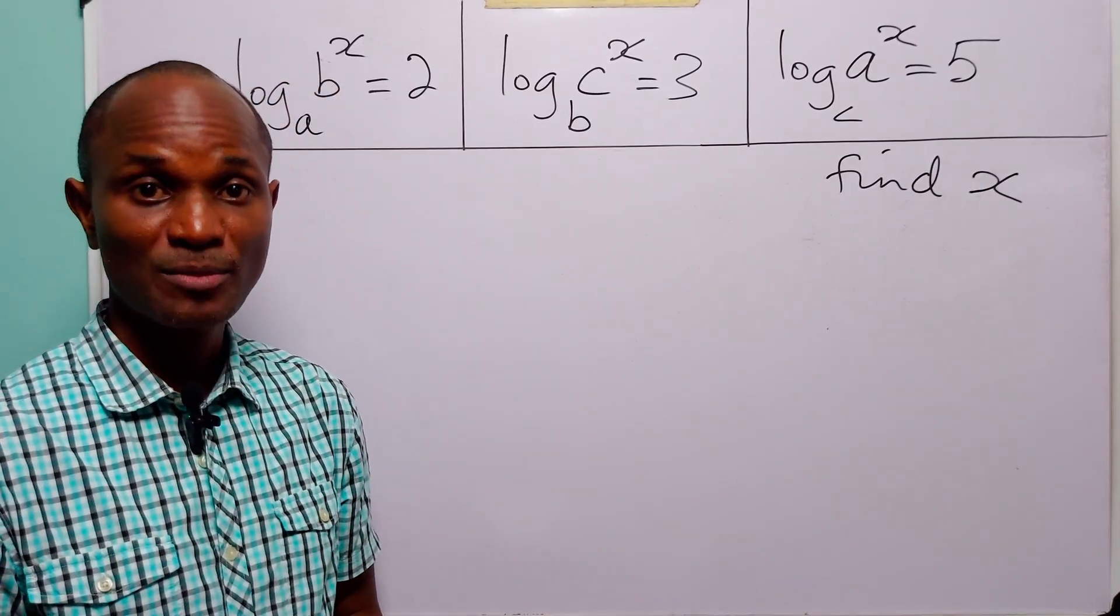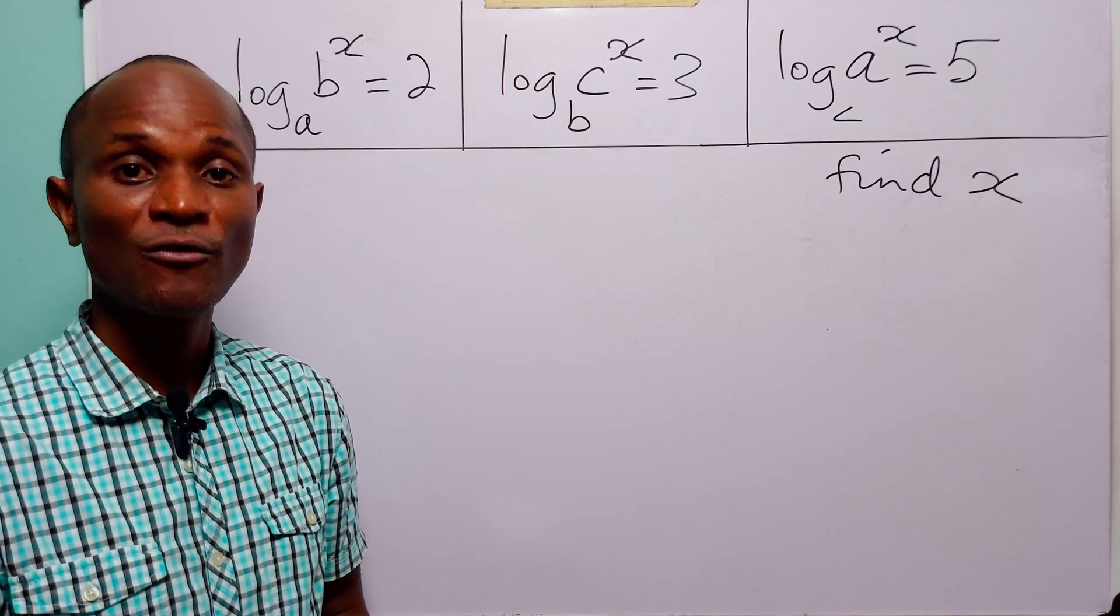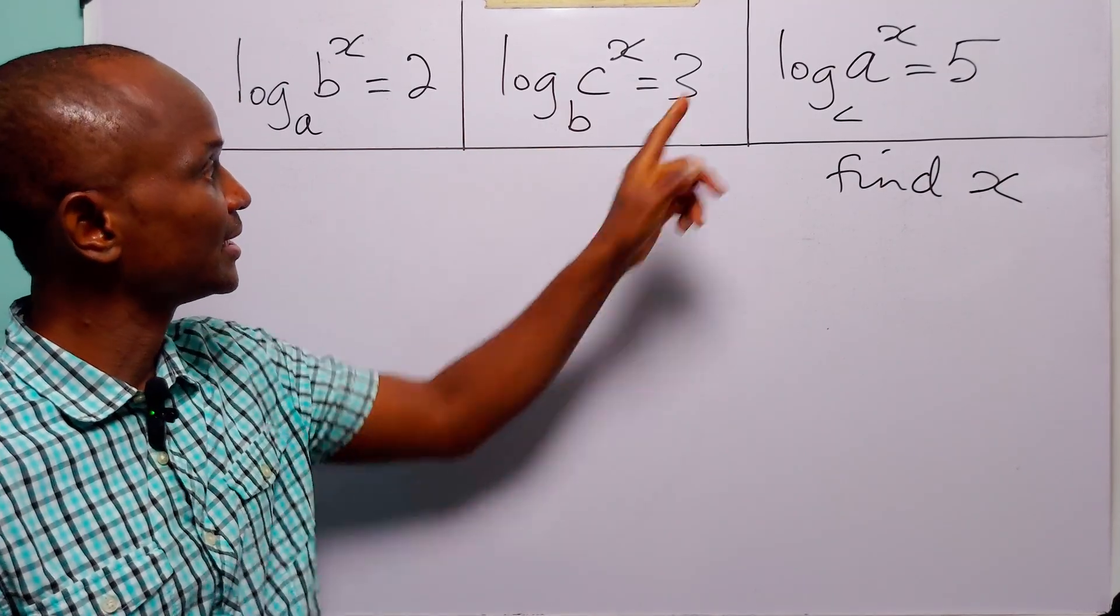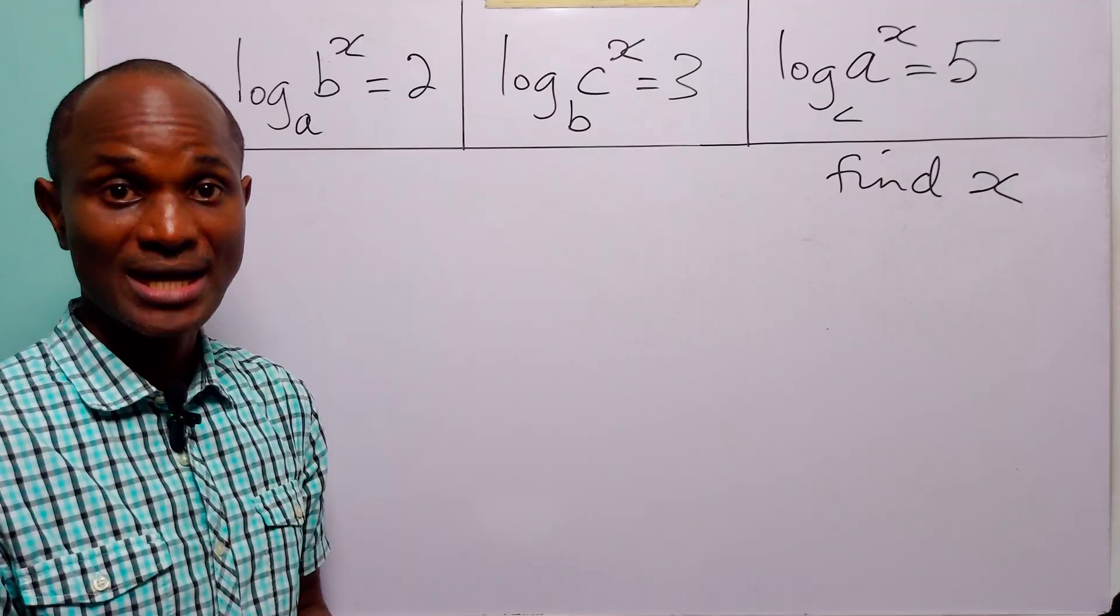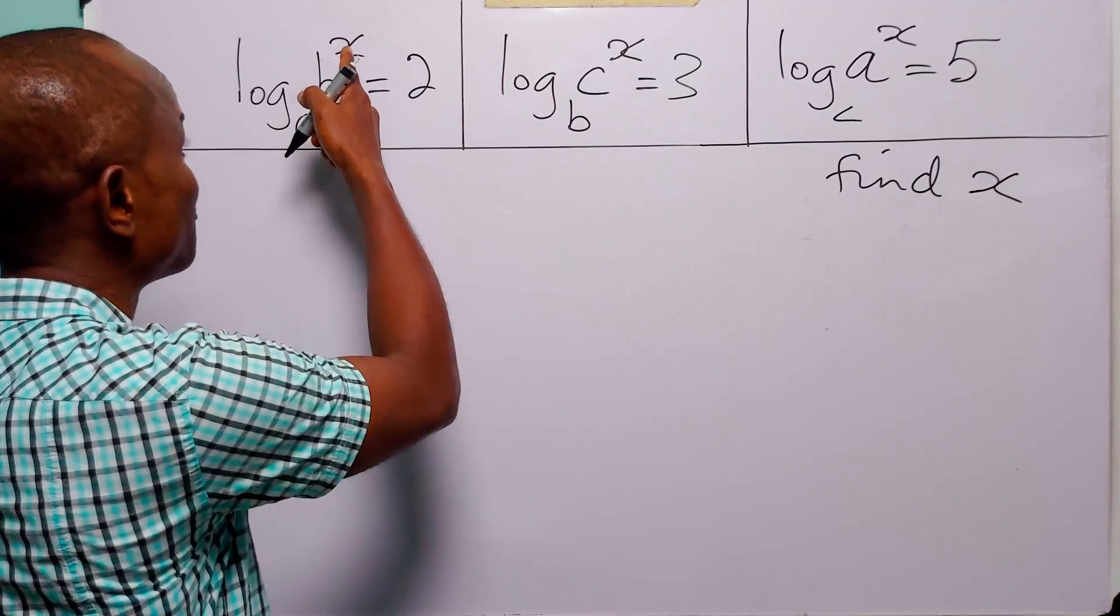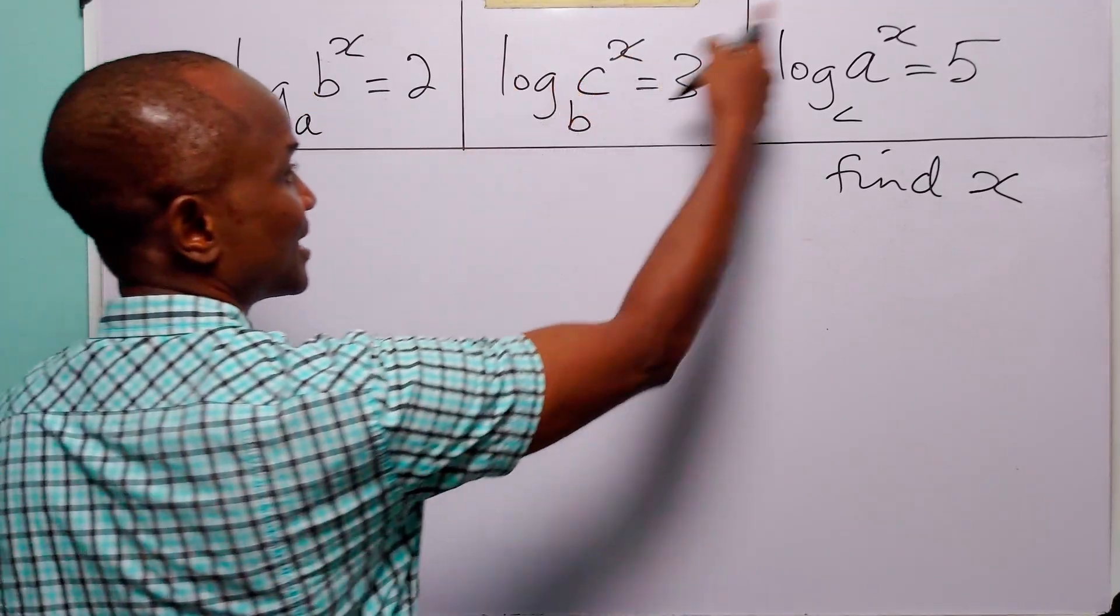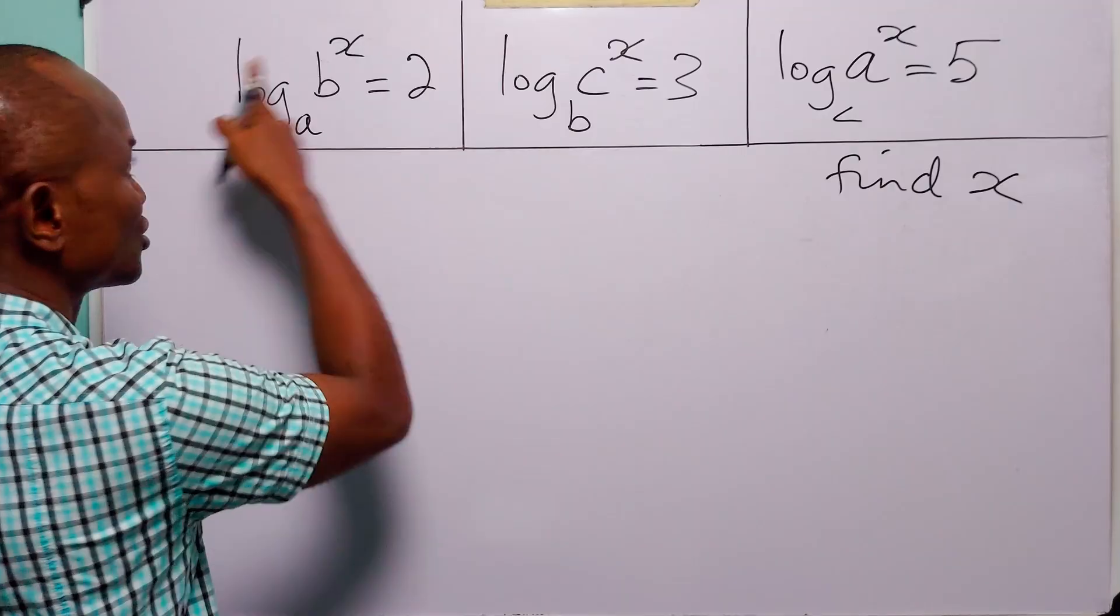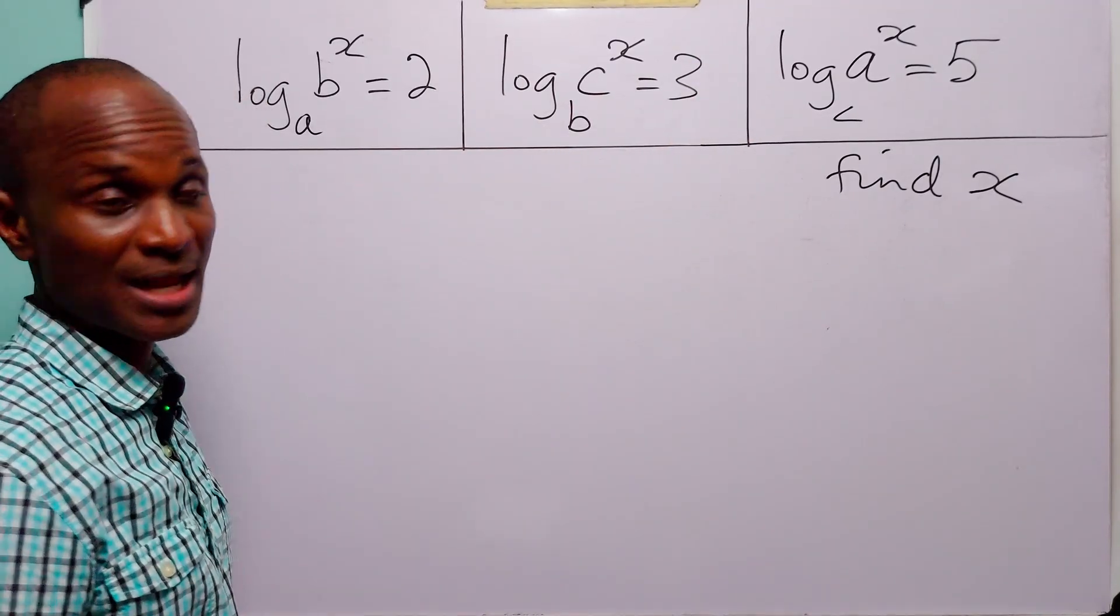Now to solve this problem our first step will be to apply the power rule of logarithms to all three equations. Of course you know that is the rule that says we can bring down this exponent that is x to the front of the log terms to become a multiplier.